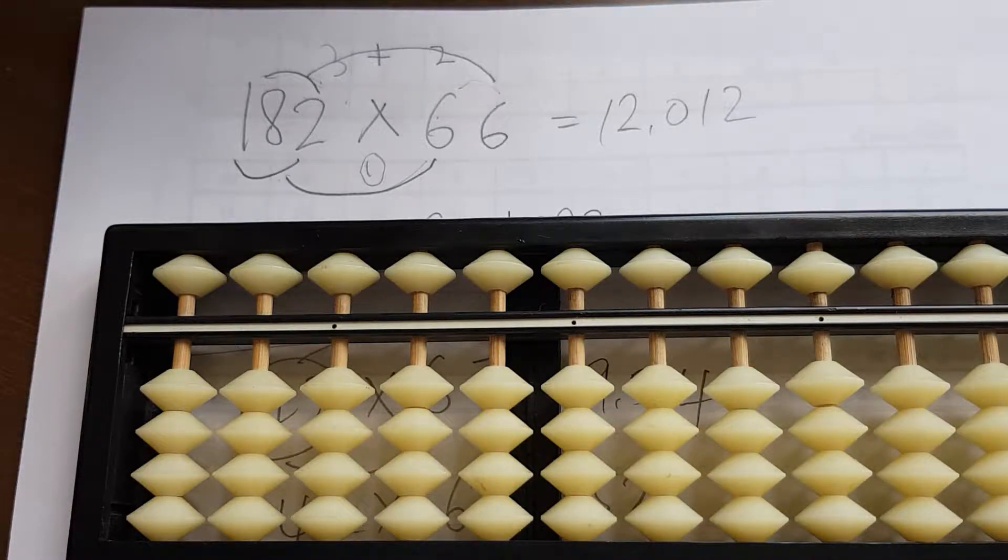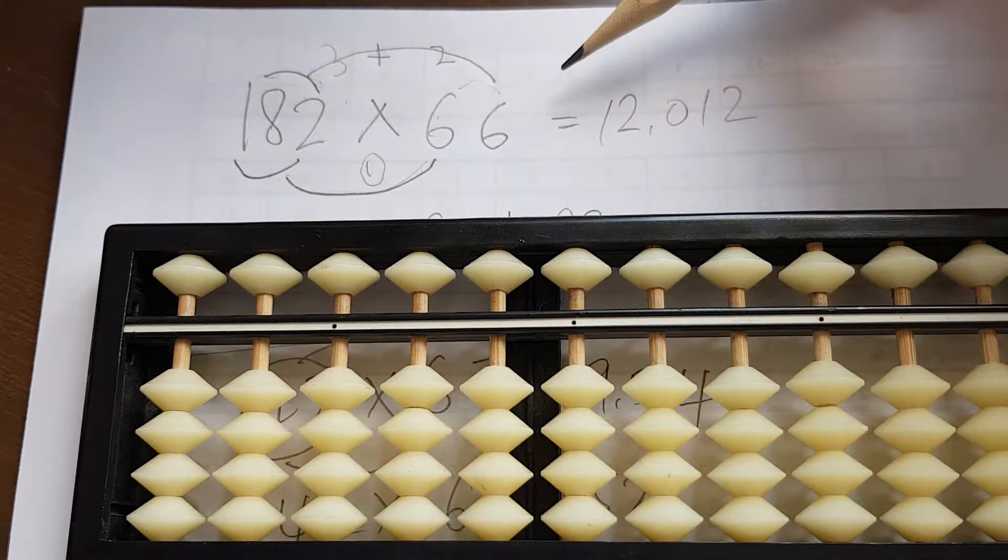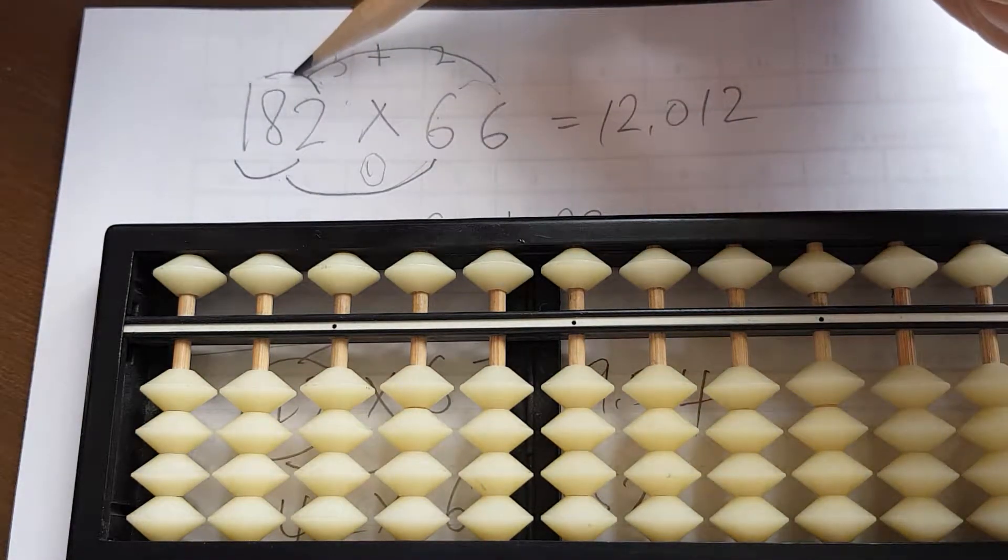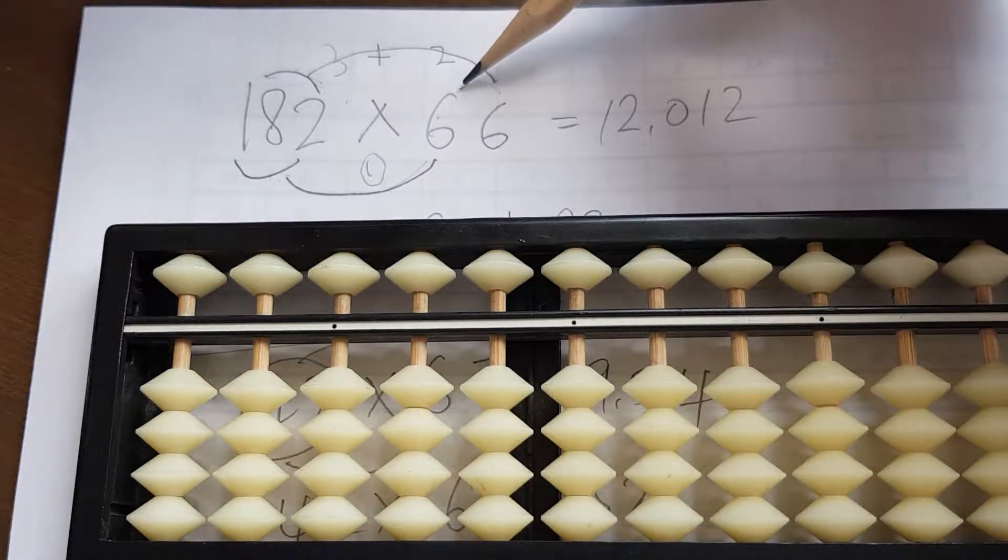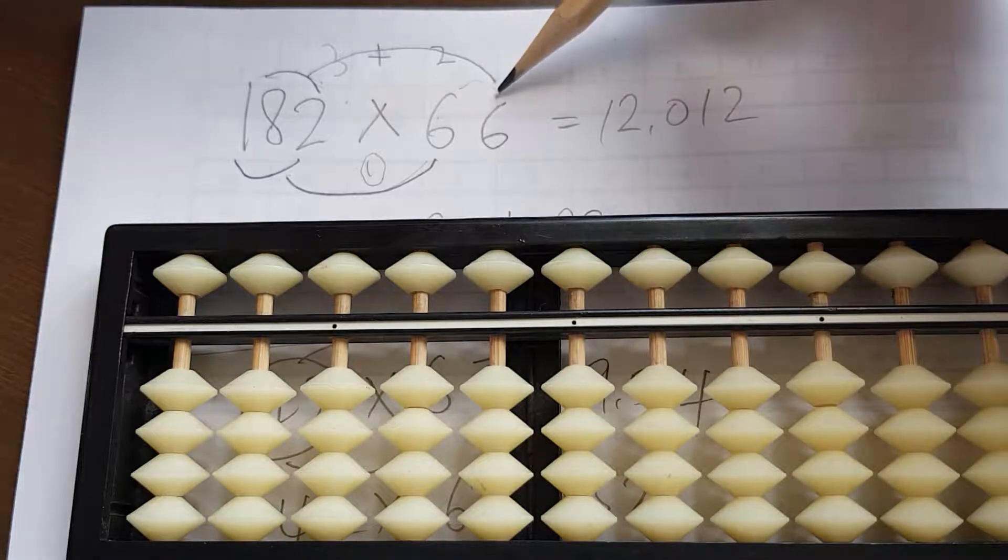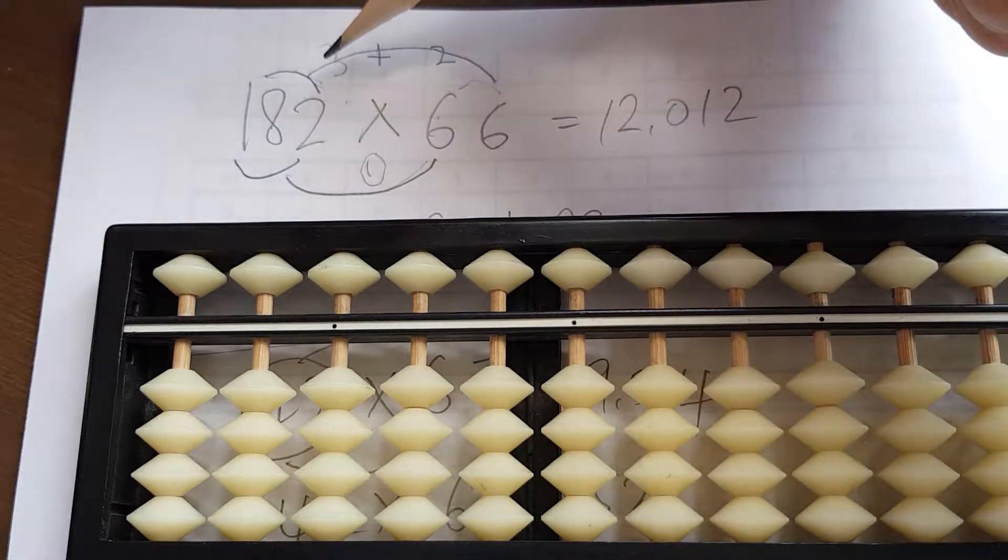In this video I'm going to show you how to do three by two digit multiplication—three digits on this side and two digits on this side. As a rule of thumb on the soroban, if you want to know which column to place them on, we need to locate where to put them.